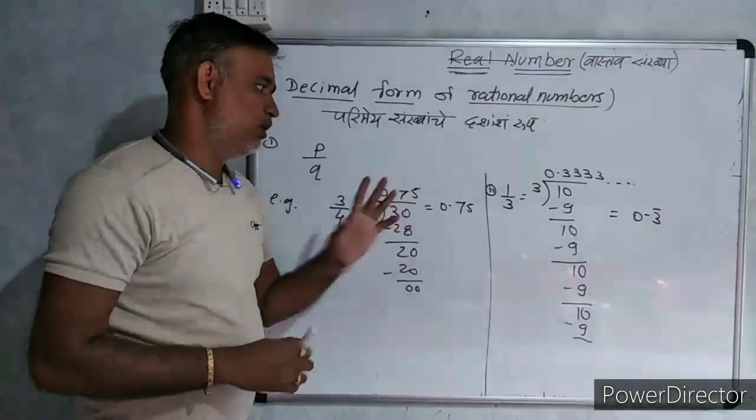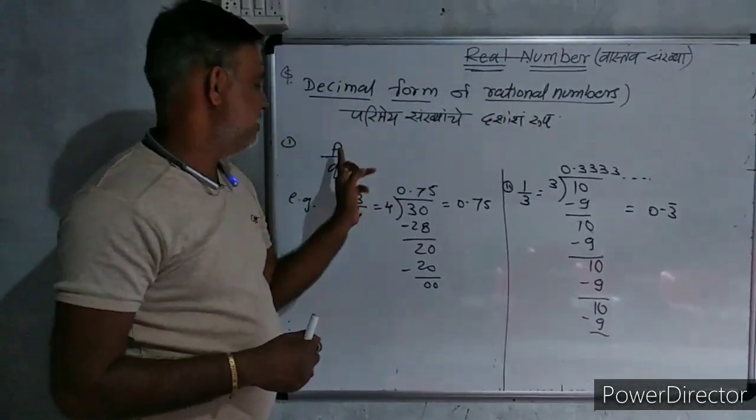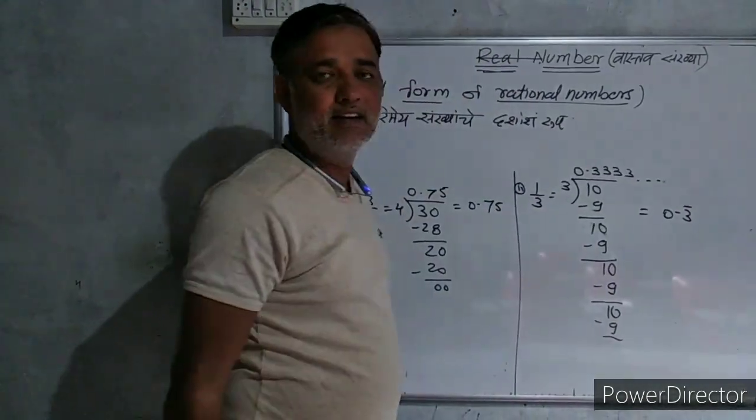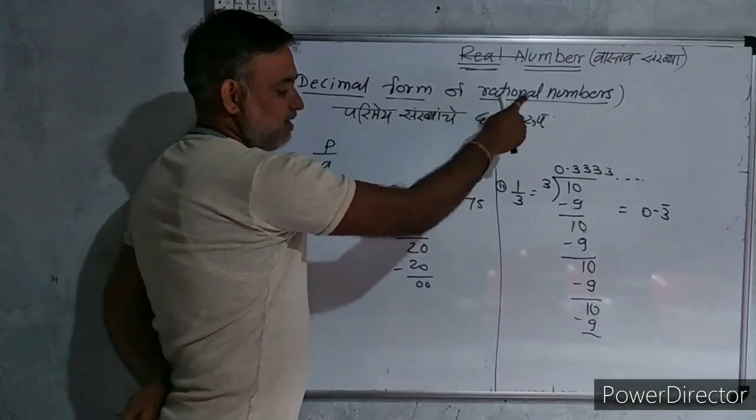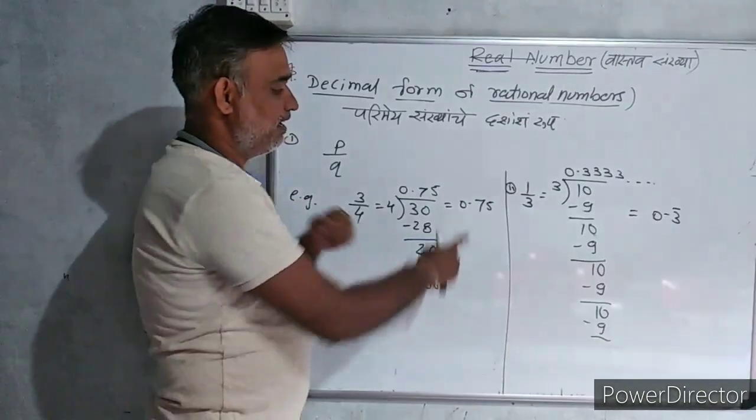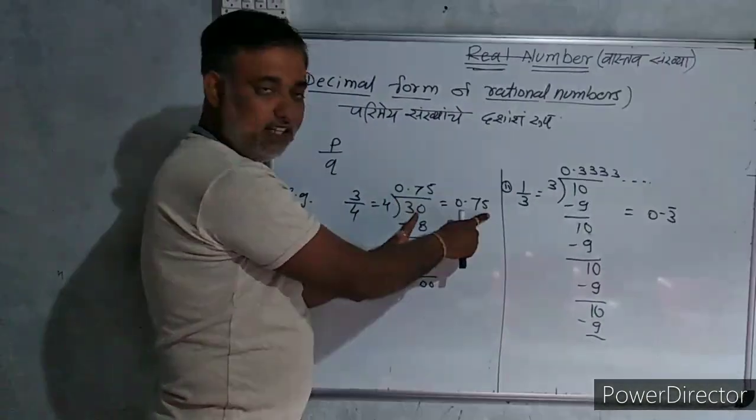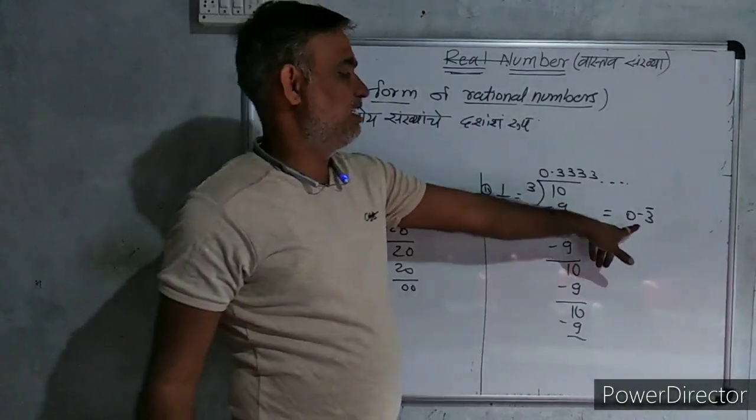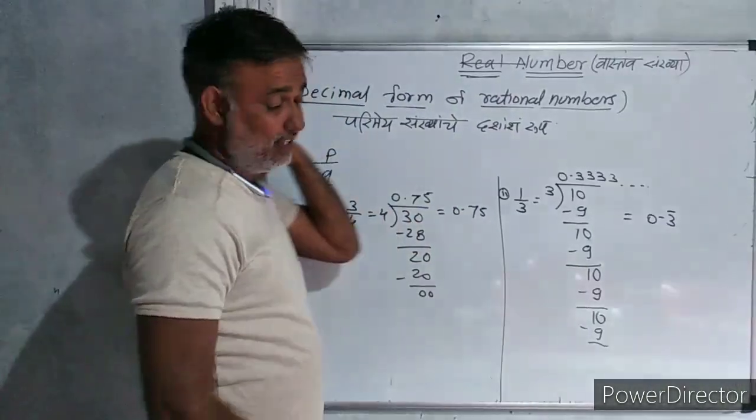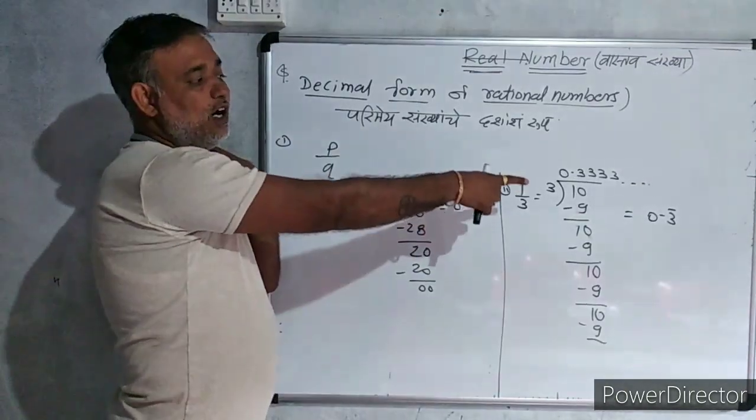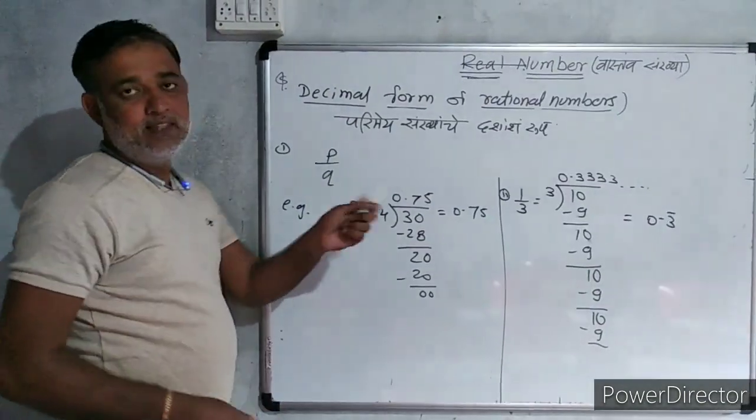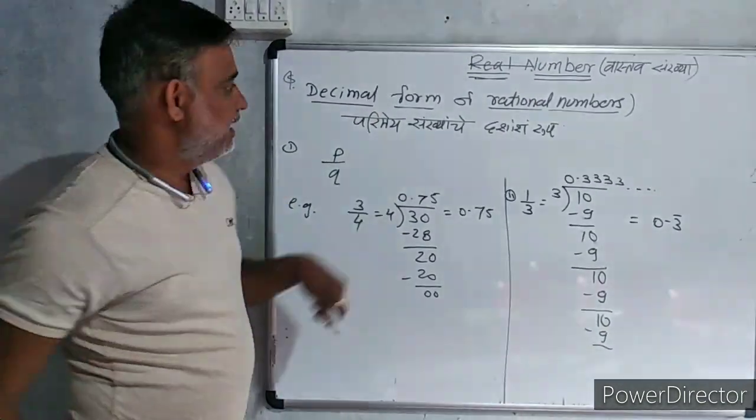If we observe the two examples, here we can say that the decimal form of rational numbers is terminating or non-terminating recurring. The decimal form of rational number is terminating or non-terminating recurring. You can solve the other examples. And today's last point is: